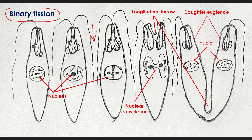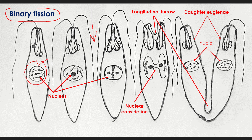In this process, first the nucleus is divided by mitosis, followed by division of the cytoplasm, which is called cytokinesis. During mitosis, all the nucleoli — also called endosomes — fuse together into a single nucleolar body.